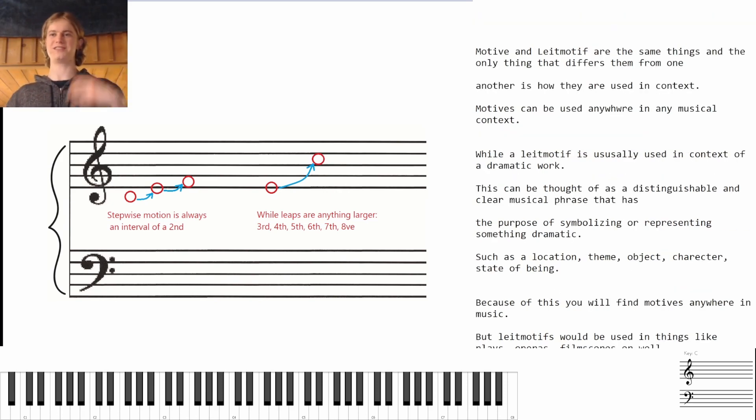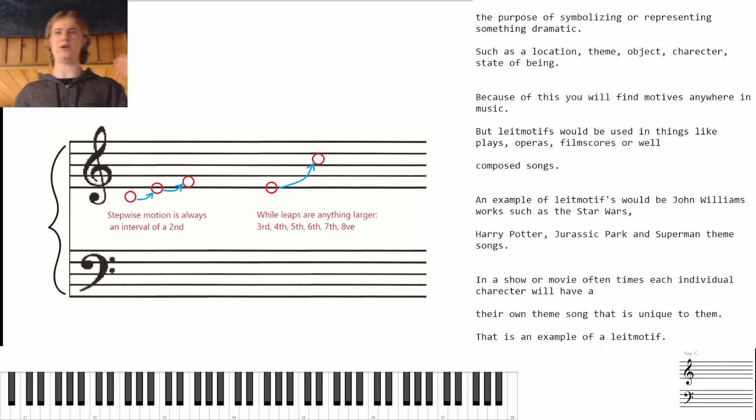Okay, so motive and leitmotif are the same things and the only thing that differs them from one another is how they are used in context. Motives can be used anywhere in a musical context, while a leitmotif is usually used in the context of a dramatic work. This can be thought of as a distinguishable and a clear musical phrase that has the purpose of symbolizing or representing something dramatic, such as a location, a theme, an object, a character, or a state of being. Because of this you will find motives anywhere in music, but leitmotifs would be used in things like plays, operas, film scores, or well-composed songs.